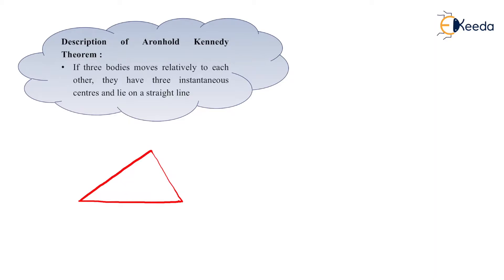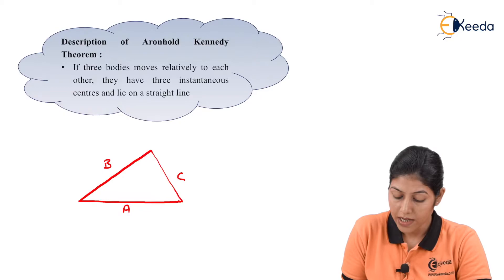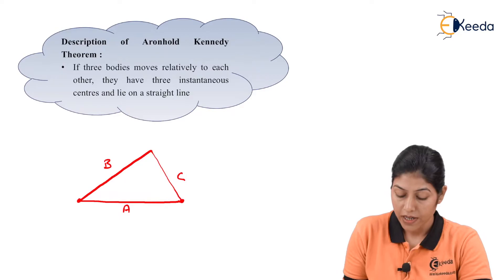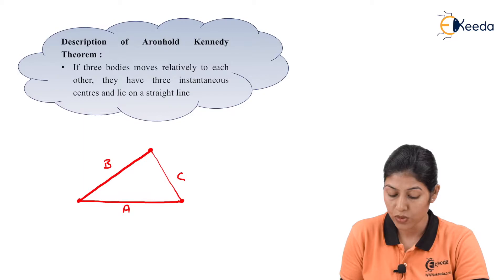Let's consider three links: link A, link B, and link C, where all the links are connected to each other. Link A and B are connected at one particular point, link A and C are connected at another point, and link B and C are connected at a third point. So all the links are connected by three joints — three links with three joints.